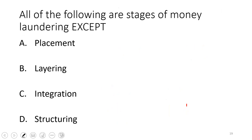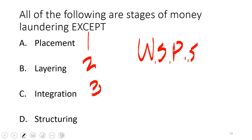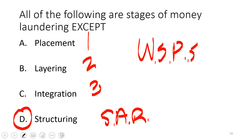All of the following are stages of money laundering. In your written supervisory procedures, there must be a section on anti-money laundering. The three stages are: placement (putting the dirty money somewhere), layering (mixing dirty money with clean money), and integration (dirty money is indistinguishable from clean). Structuring is a tool for money launderers — breaking transactions into smaller amounts to avoid triggering a Currency Transaction Report (CTR) — but it's not a stage of laundering; it would likely trigger a Suspicious Activity Report instead.